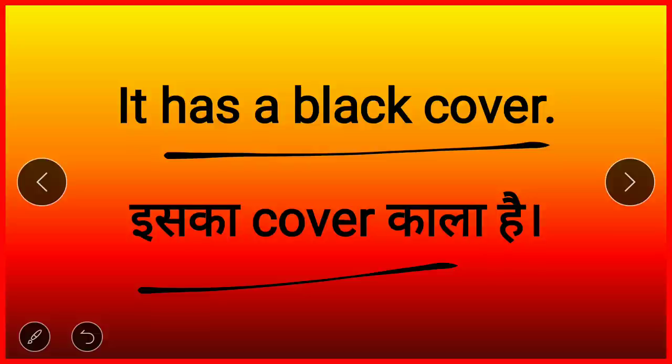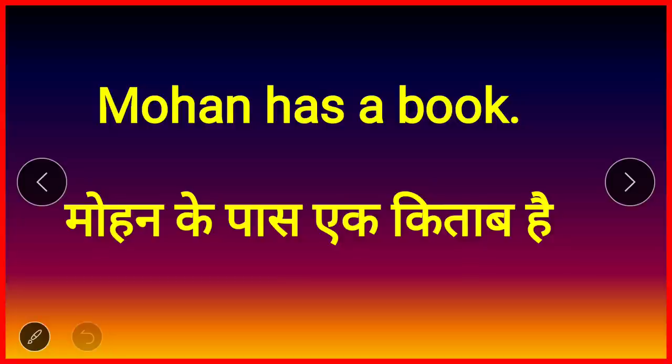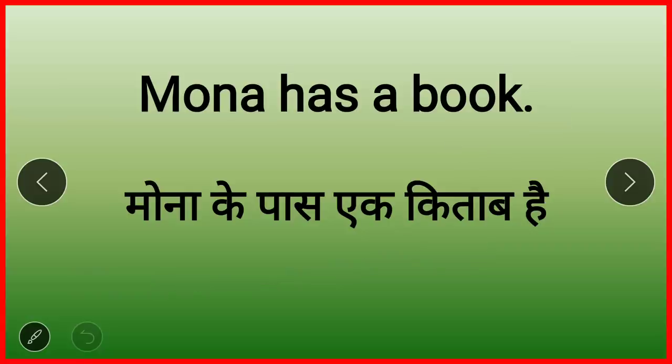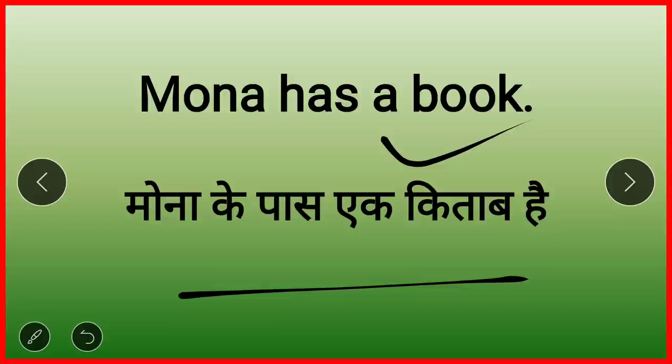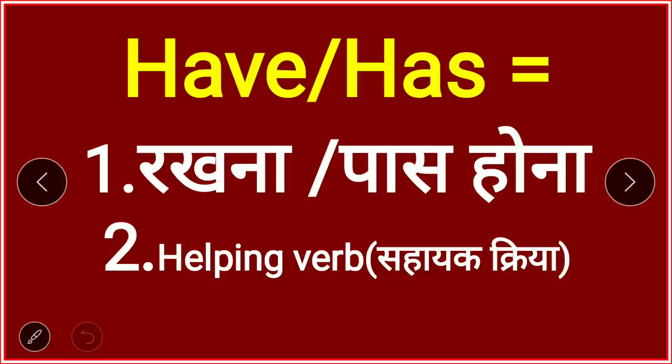With he, she, it, and names, you use 'has.' With a name — let's take a boy's name and a girl's name. 'Mohan has a book' — Mohan ke paas ek kitab hai. Whether the name is a boy or girl, with all names you use 'has.' Clear hai?